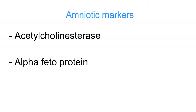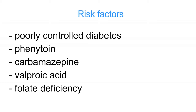Risk factors for developing neural tube defects include poorly controlled diabetes in the mother, phenytoin use, carbamazepine use, valproic acid, and folate deficiency. Of course, the three medications listed are all anti-seizure medications.